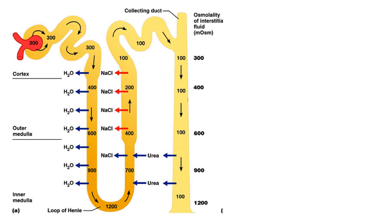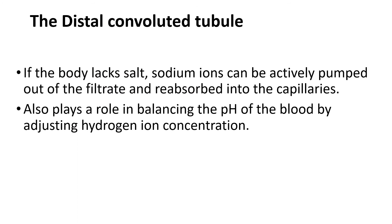The distal convoluted tubule, which we haven't talked about much yet, is where you can balance the ions in your blood - you can balance sodium - and balance the pH of your blood by balancing the hydrogen ion concentration. The major function of the distal convoluted tubule is the reabsorption of hydrogen ions in order to maintain the pH of your blood.